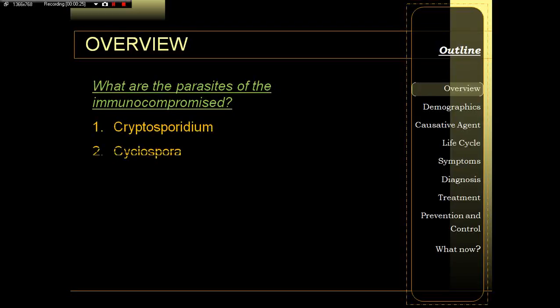So what are the parasites that we will be talking about in this lecture? Basically, we have four parasites, or coccidians, or circular protozoans: cryptosporidium, cyclospora, cystoizospora, and toxoplasma.